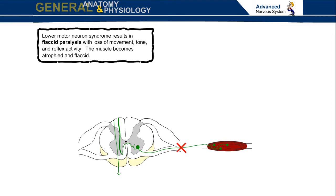Lower motor neuron syndrome results in flaccid paralysis with loss of movement, tone, and reflex activity. The muscle becomes atrophied and flaccid.